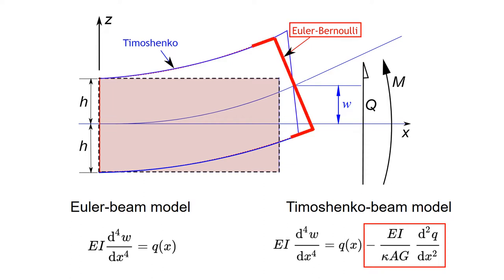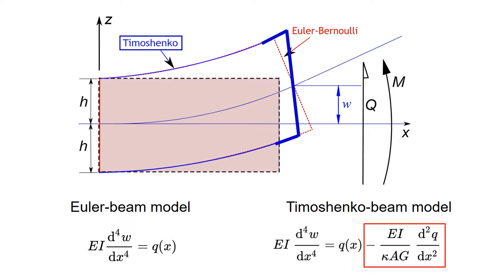The deformed shape of the beam from the Euler model is shown in the red line in the figure, while the deformed shape from the Timoshenko model is shown in the blue line. As you can see from the deformed shapes, the Timoshenko beam model is more flexible because it accounts for shear deformation, as shown in the bottom right equation.